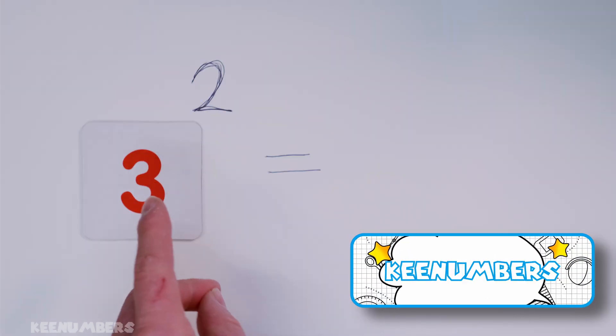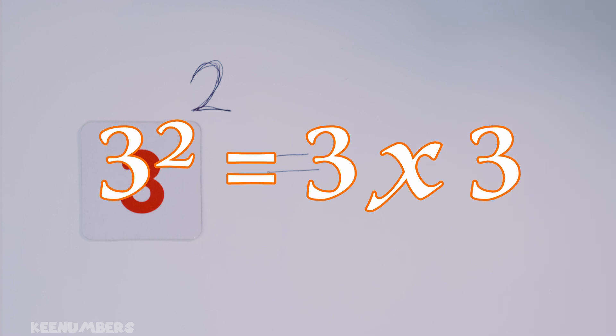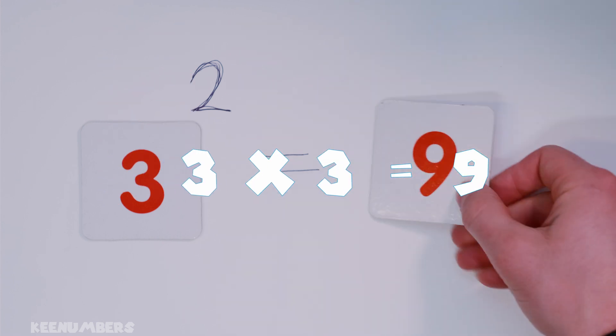Three squared. That just means three times three. A three by three? You know that one. That's a big whopping nine.